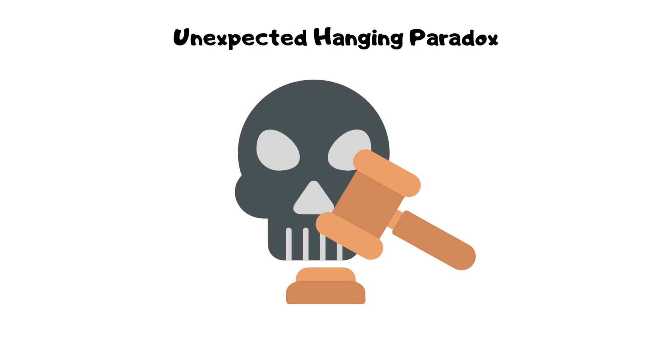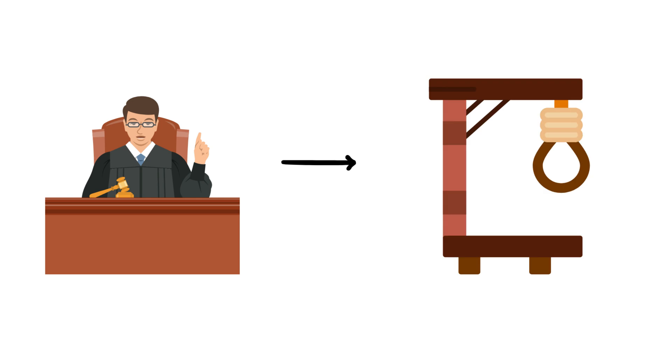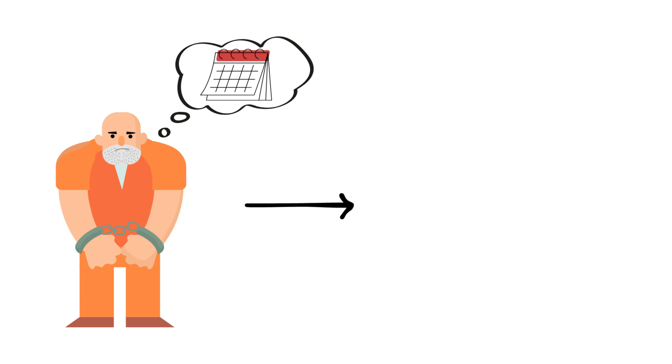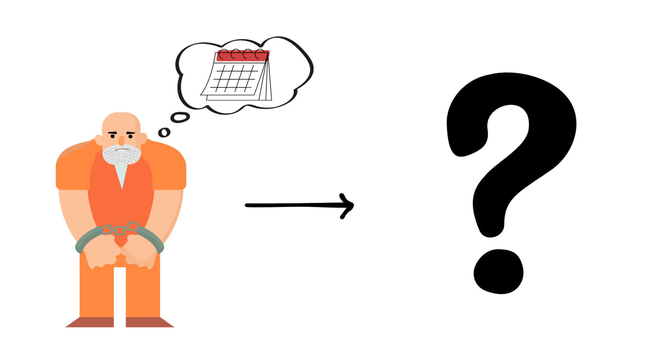Unexpected hanging paradox. A judge says a prisoner will be hanged on a weekday as a surprise. The prisoner reasons he can't be hanged on any day, but is then surprised when it happens, illustrating contradictions in predictions and surprises.